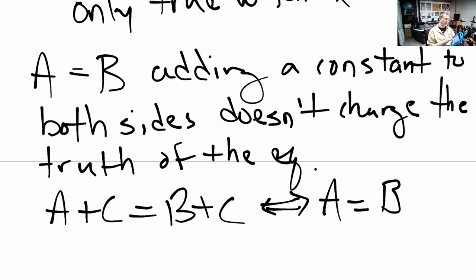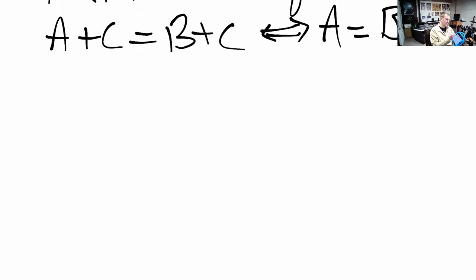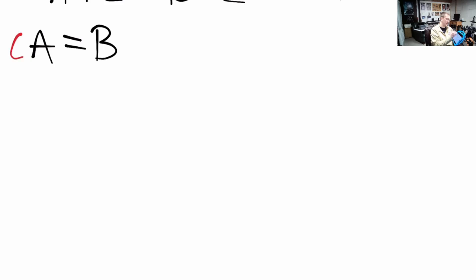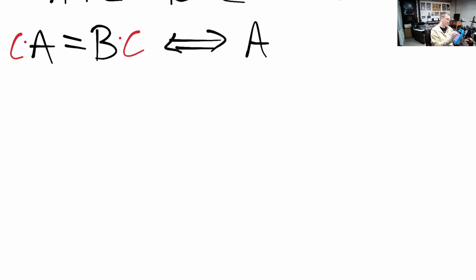Another property is multiplication. If we start with a equals b and multiply both sides by a constant, the multiplication does not affect the truth of this equality. If a equals b, then a times c equals b times c.